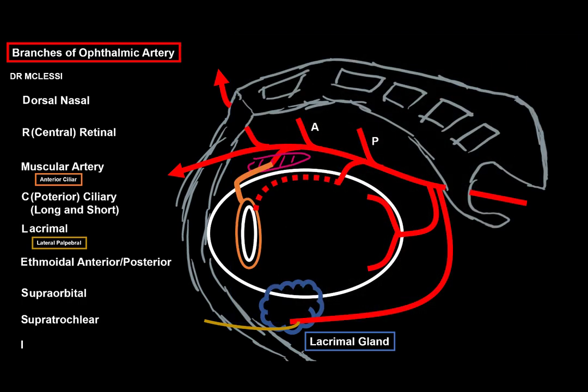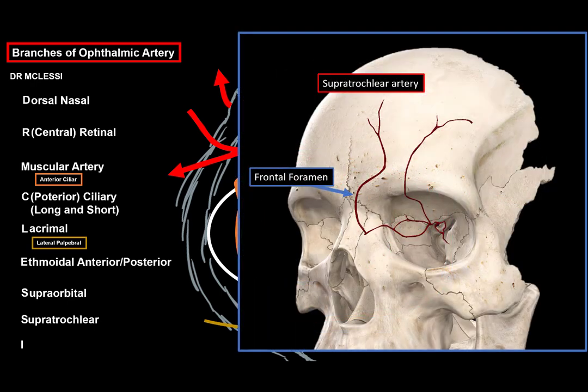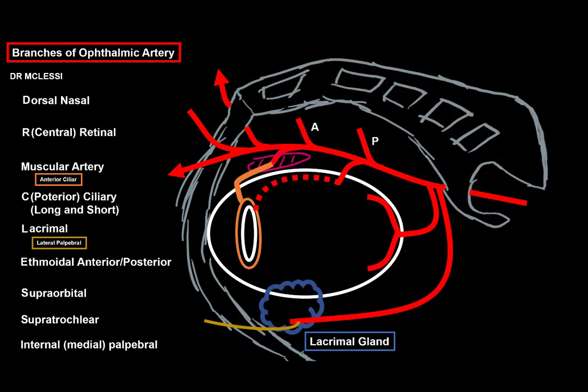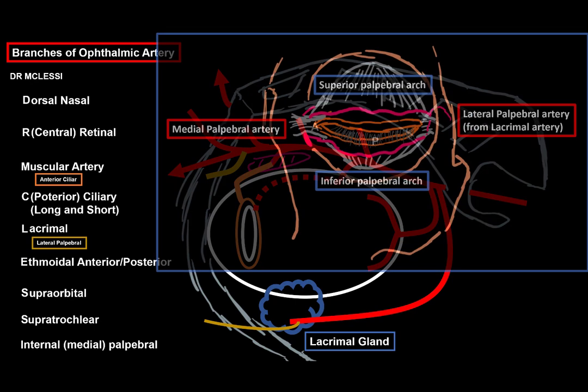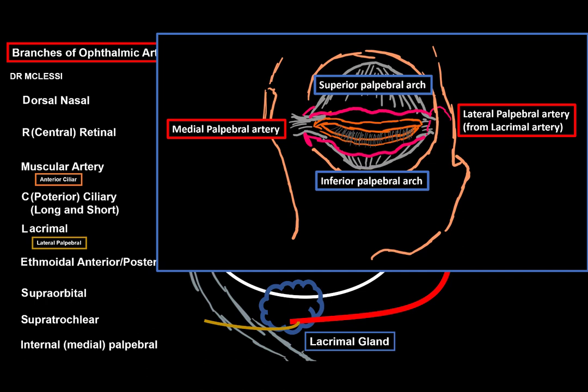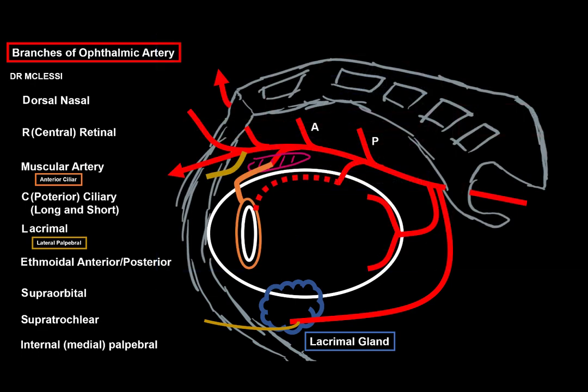Then we got one similar called the supratrochlear artery, which also passes upwards through the frontal foramen, which is a little medially to the supraorbital fissure. The supratrochlear artery will also supply the skin and muscles of the forehead. The last letter, I, stands for the internal or medial palpebral artery, which goes out on the medial side of the eye, forming a superior and inferior palpebral arch together with the lateral palpebral artery, supplying the eyelids.